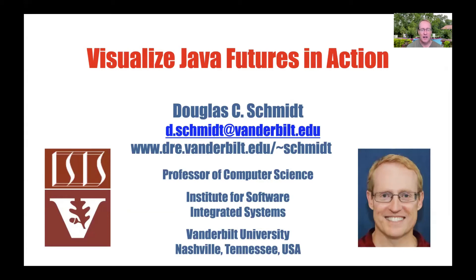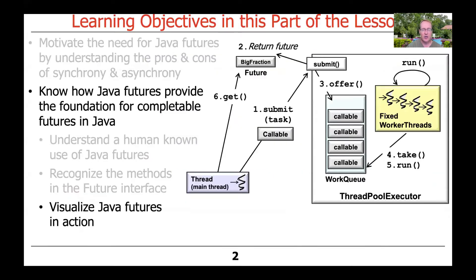The next topic is how to visualize Java futures in action. I'm a big fan of showing visualizations of code as well as showing code itself. I sometimes think it's helpful to get that right-brain, holistic perspective on how the actual processes and capabilities work. Because otherwise, you're just looking at code, and code is notoriously linear in terms of how you can read it.